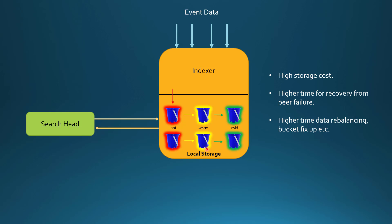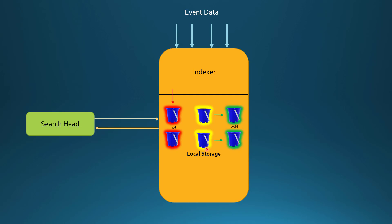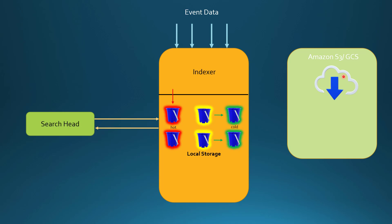To fix that, Splunk provides an indexer capability where instead of local storage we can store the data into cloud or some inexpensive storage. It's not only necessarily Amazon S3 or GCS — you could have a local solution which is very inexpensive and store the data there as well. What happens is when the hot bucket rolls to the warm bucket, in this particular solution a copy of the warm bucket gets stored in the remote storage. This copy actually becomes the master copy of the warm bucket throughout the cluster.